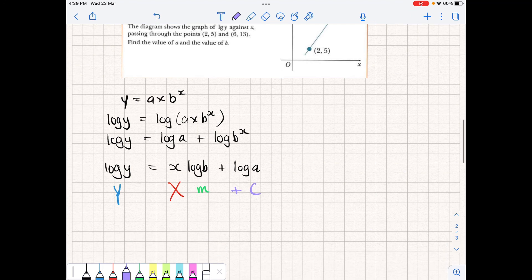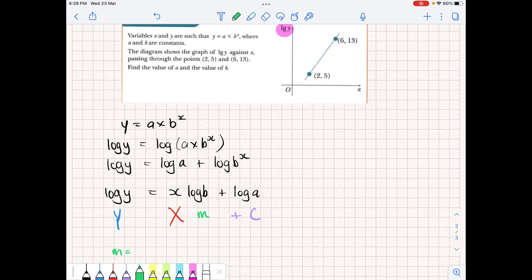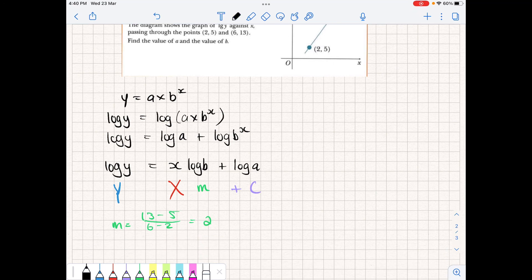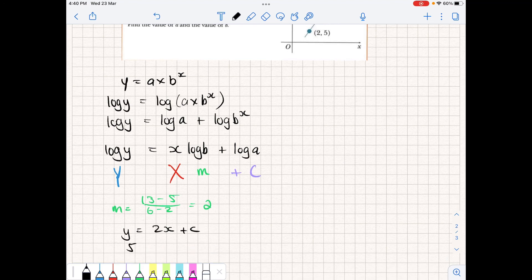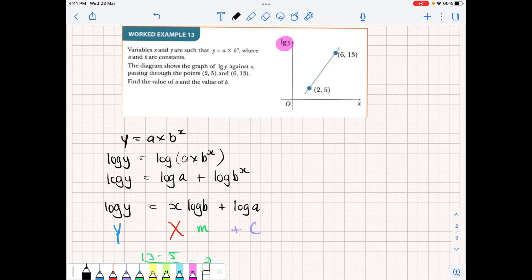So to calculate m, m is just change in y over change in x. So again, we can just take the coordinates and we'll go 13 minus 5 all over 6 minus 2. And that's going to give us 2. Okay, to calculate c, we can just use our equation y = 2x + c. We can substitute in any of the points. So let's go 2 and 5. So we'll have 5 = 2 times 2 is 4 + c. So c is equal to 1.